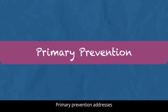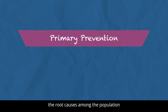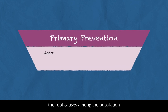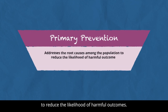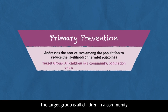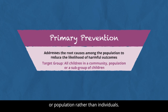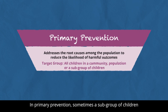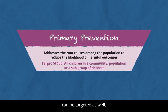Primary Prevention addresses the root causes among the population to reduce the likelihood of harmful outcomes. The target group is all children in a community or population rather than individuals. Sometimes a subgroup of children can be targeted as well.